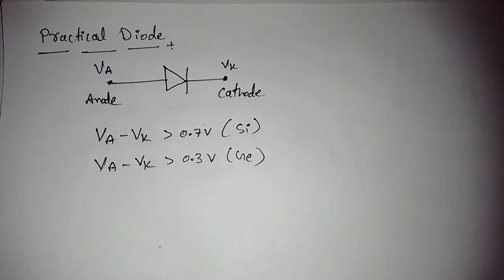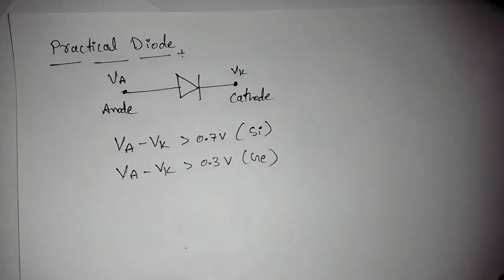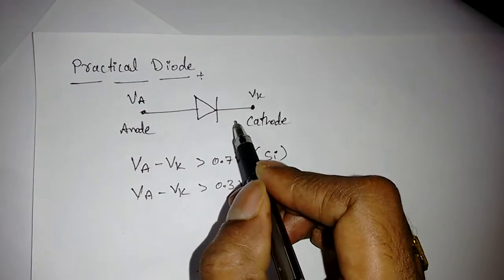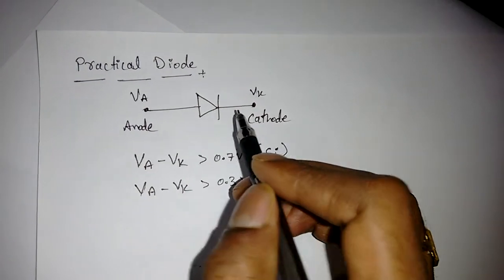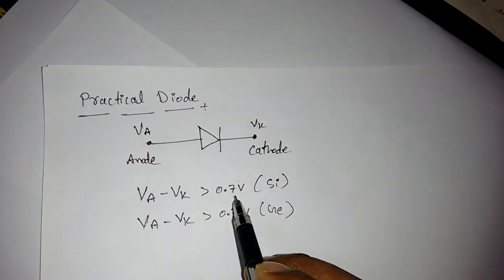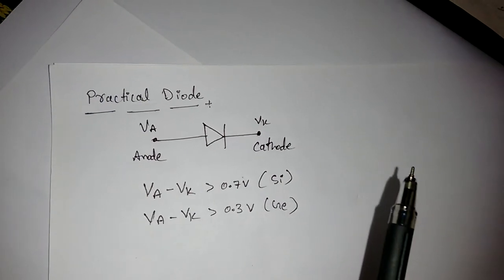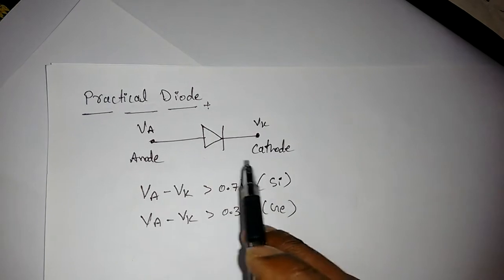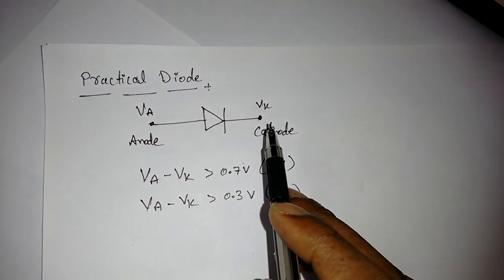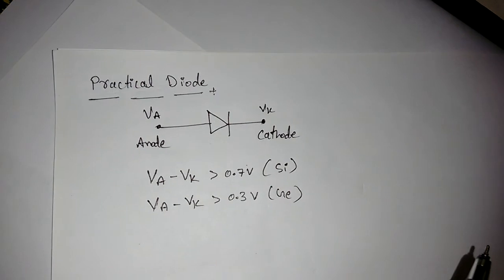In this lecture we will discuss the practical diode. Previously we saw the ideal diode and its characteristics. For the ideal diode, whenever VA is greater than zero the diode is on. But for practical conditions, the potential difference between the anode and cathode should be at least 0.7V for silicon and at least 0.3V for germanium. This defines the barrier potential.